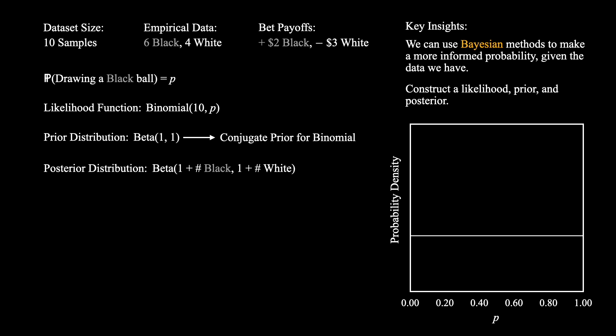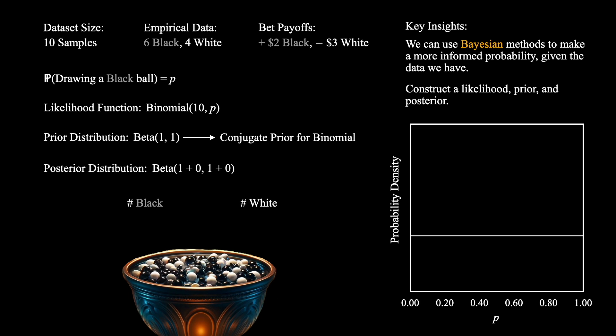We can now simulate out the process of data generation. Let's bring out the urn and draw from it to see how each new piece of information updates our posterior distribution beliefs. First, we draw a white ball. This heavily shifts our current beliefs towards white. We see that there is now a zero probability of p being one — that is, we are 100% sure that the urn is not all black. Our probability density then monotonically and linearly increases as the value of p decreases.